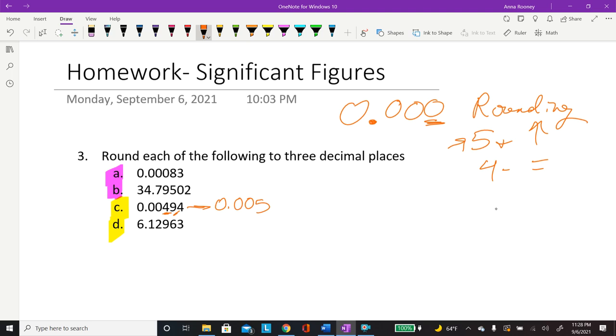Then for this next one, 1, 2, 3 - that is where we're rounding to. The one next to it is a 6. Actually, this is an interesting one, because you would actually change it to 6.130. And this is a trailing zero after a decimal point, so this would be a significant figure for sure.